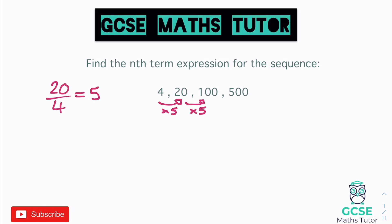Writing an nth term for this is very different to linear or quadratic nth terms. I like to link this back to compound interest. If we have £1,000 in the bank at a 3% rate of compound interest, we would multiply by 1.03 each year. So at the end of the first year we'd have £1,030.